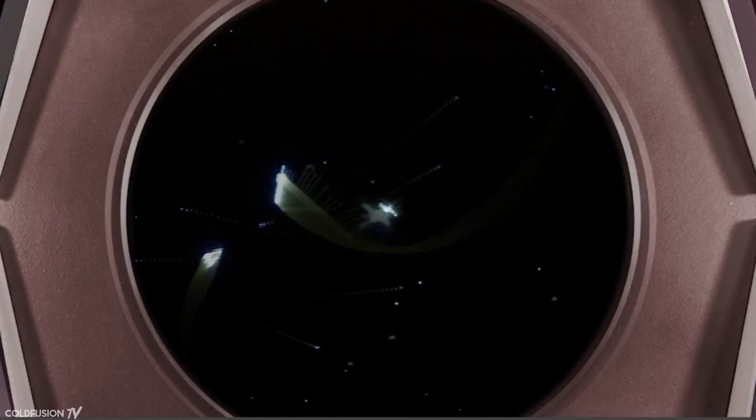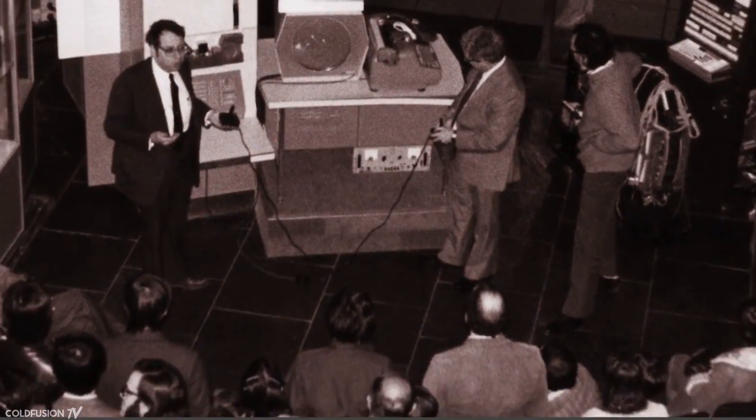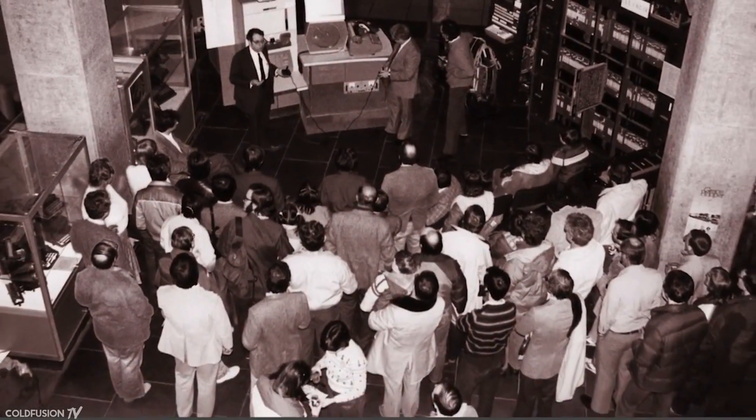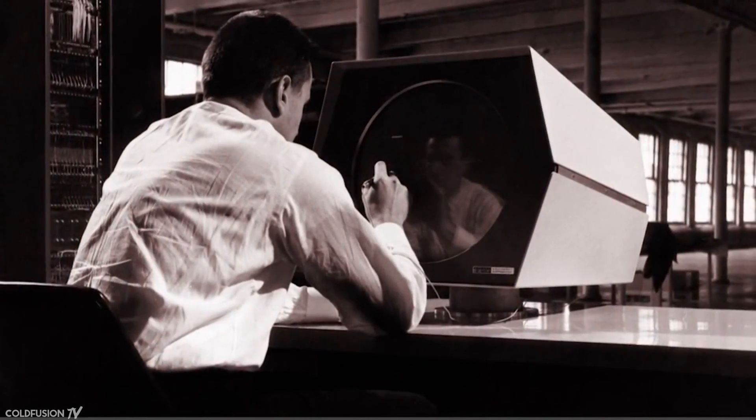In 1962, three MIT employees — Martin Greats, Steve Russell, and Wayne Wittenen — created the game Space War on the PDP-1. The two-player game involved a dogfight between two spaceships set against the backdrop of a star field. Interestingly, one of the aims of the game's design was to use up all of the computer's resources and utilize every part of the machine — essentially the maximum performance of 1961 technology. Space War was copied to other mini computers in other American universities, making it the first video game to be available outside a single research institute.